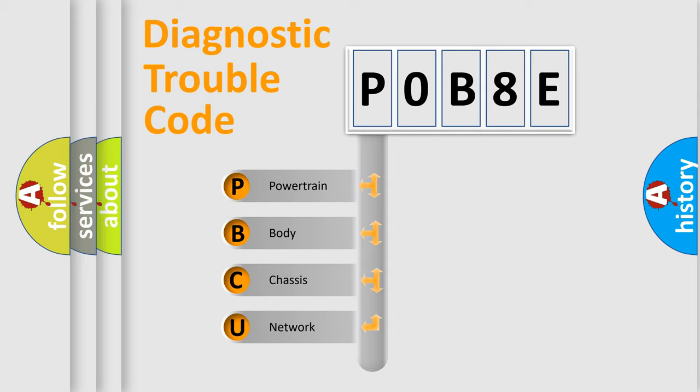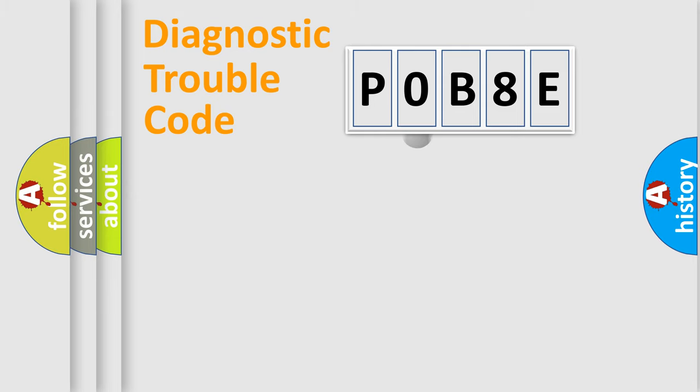We divide the electric system of automobile into four basic units: Powertrain, body, chassis, and network. This distribution is defined in the first character code.